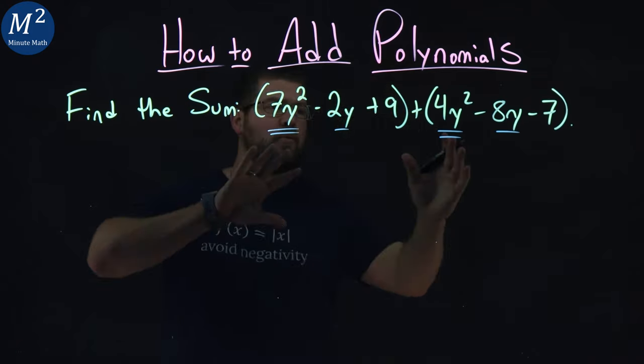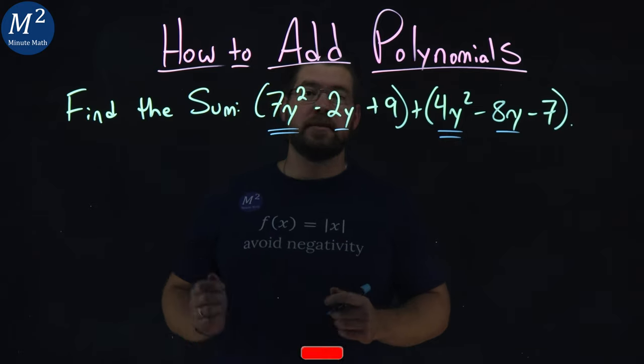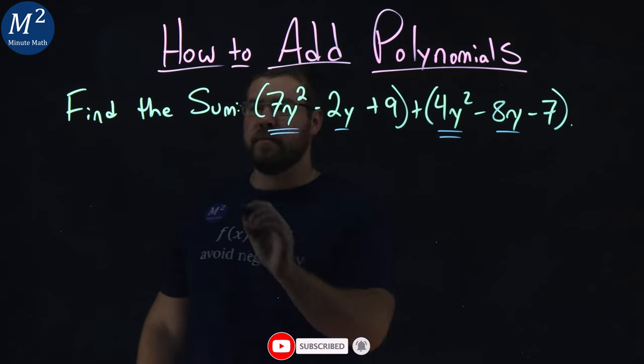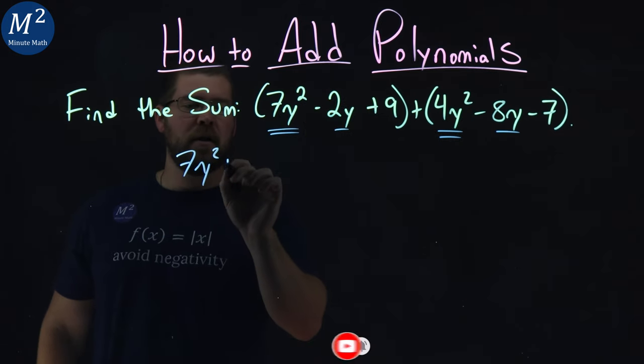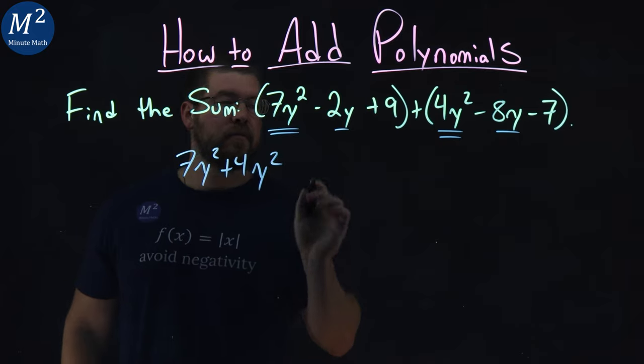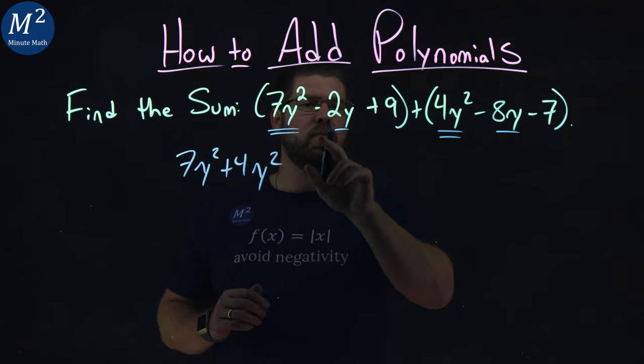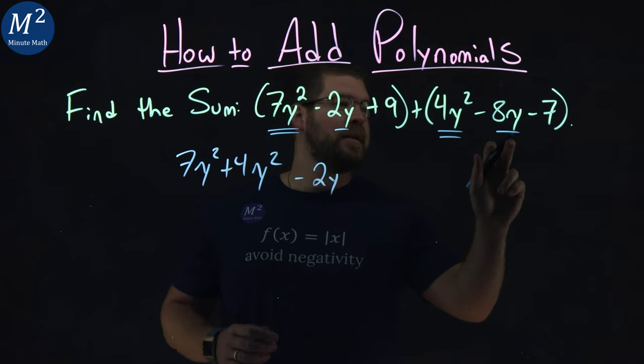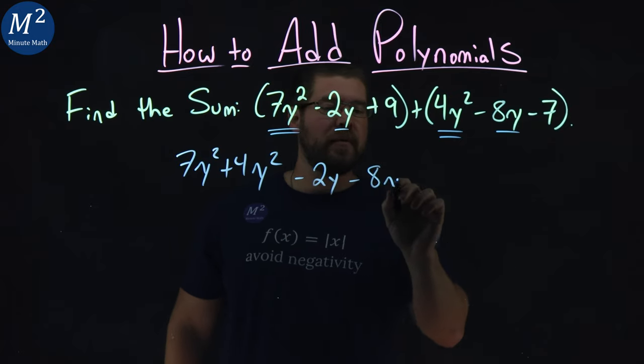So now we're going to reorder this to put our like terms next to each other: 7y² and 4y². Let's add up 7y² plus 4y². Now we're going to deal with the y's: minus 2y here and its like term is minus 8y right there.